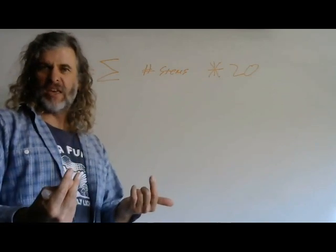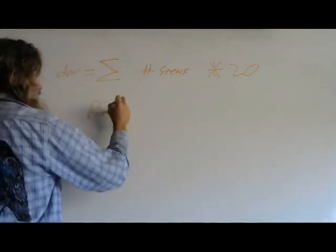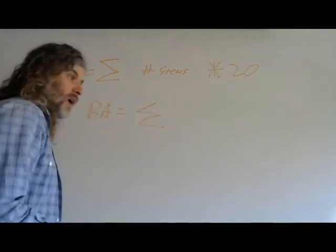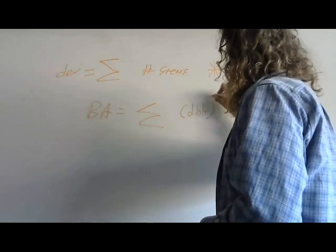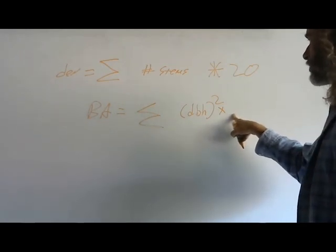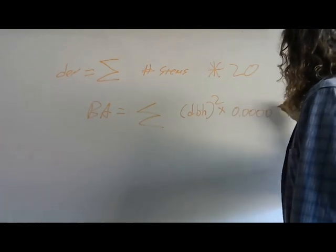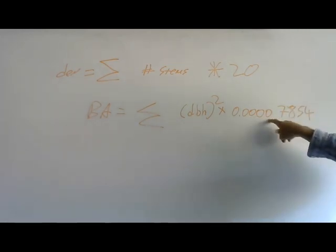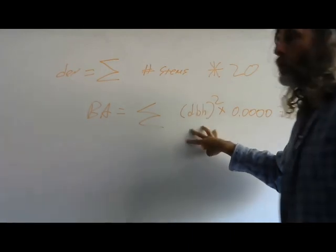We can calculate basal area as the sum, excuse me, mistake there, as the sum of this little transformation. For each tree, we can take DBH, diameter at breast height, square that, and then multiply it by a factor to convert this into meters. Excuse me, this is DBH in centimeters. And then we can multiply it by this funny little number, 0.00007854, to convert each individual diameter into square meters.